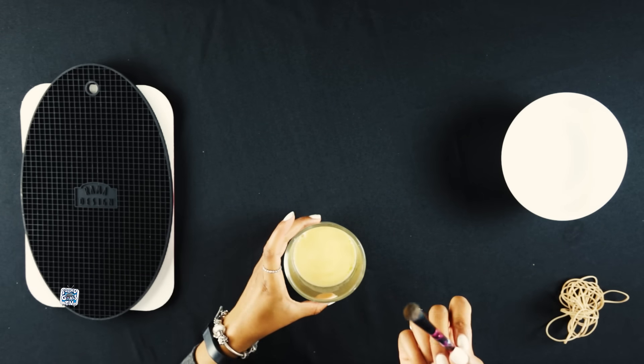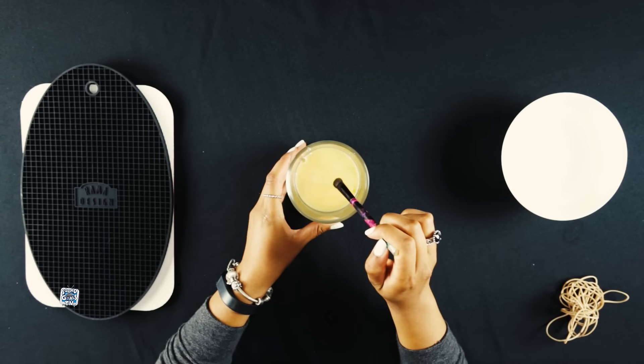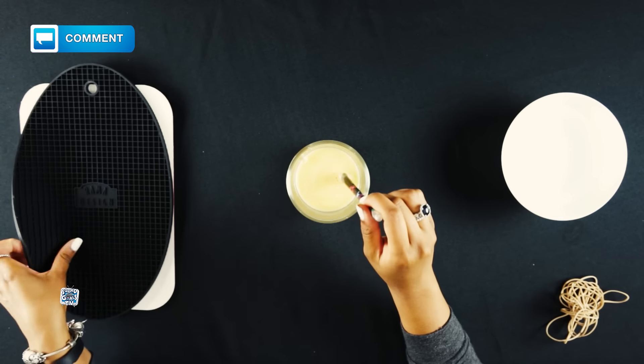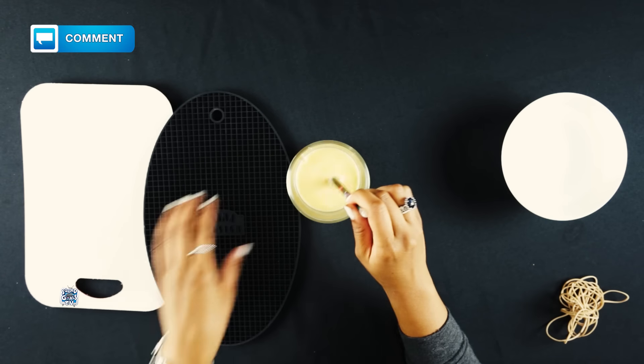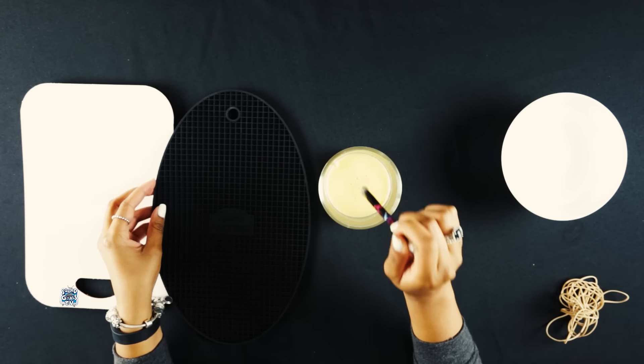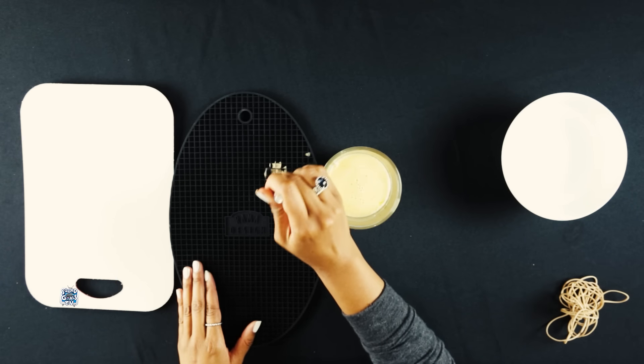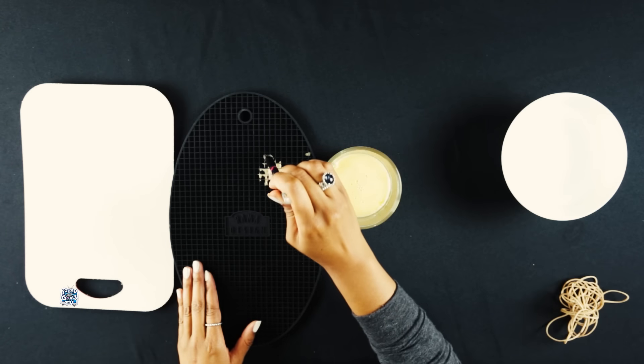So then you'll want to take your brush and just put it in here, kind of get some of it onto your brush. Then you'll take your silicone pad and make little swirls on the pad to clean out your brush.